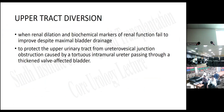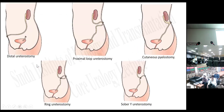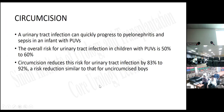Upper tract diversions: when renal dilation and biochemical markers of renal function fail to improve despite maximal bladder drainage, to protect the upper urinary tract from ureterovesical junction obstruction caused by a tortuous intramural ureter passing through a thick valve-affected bladder, options include distal ureterostomy, proximal loop ureterostomy, cutaneous pyelostomy, ring ureterostomy, and Sober-wide ureterostomy. Circumcision: urinary tract infection can quickly progress to pyelonephritis and sepsis in infants with posterior valves. The overall risk of UTI is 50–60%; circumcision reduces this risk by 83–92%.